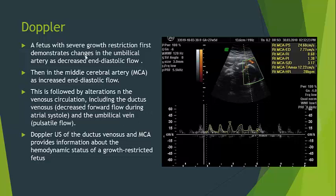A fetus with severe growth restriction first demonstrates changes in the umbilical artery as decreased end diastolic flow, then in the middle cerebral artery as increased end diastolic flow. This is followed by alteration in the venous circulation, like the ductus venosus showing decreased forward flow during atrial systole, and the umbilical vein may show pulsatile flow — also a drastic sign. Doppler ultrasound of the ductus venosus and middle cerebral artery provide important information about the hemodynamic status of the growth restricted fetus.